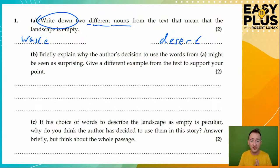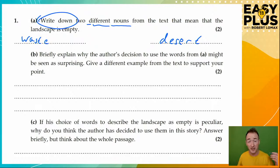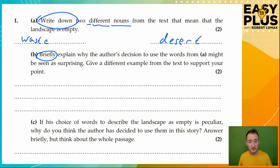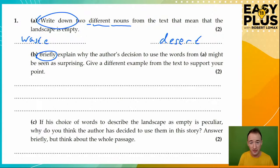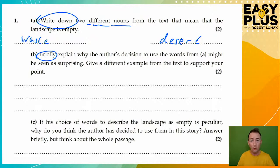Question B: Briefly explain why the author's decision to use the words from A might be seen as surprising. Give a different example from the text to support your point. 'Briefly' means we don't need lots of explanation — just put it down quickly. But we do need an example from the text. An example really should be a quotation, because that's the clearest way to give an example which will absolutely convince the examiner to give you a mark. So we're looking for a short quote and a clear point that explains why it might seem surprising.